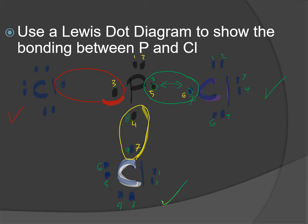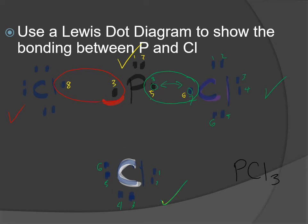Now the third chlorine is stable with eight electrons, and phosphorus gets that shared electron as its eighth, making phosphorus stable too. The molecule formed when phosphorus and chlorine react has one phosphorus and three chlorines - PCl₃. To clean things up, we replace each circled shared pair of electrons with a line. That line represents the covalent bond between phosphorus and chlorine.